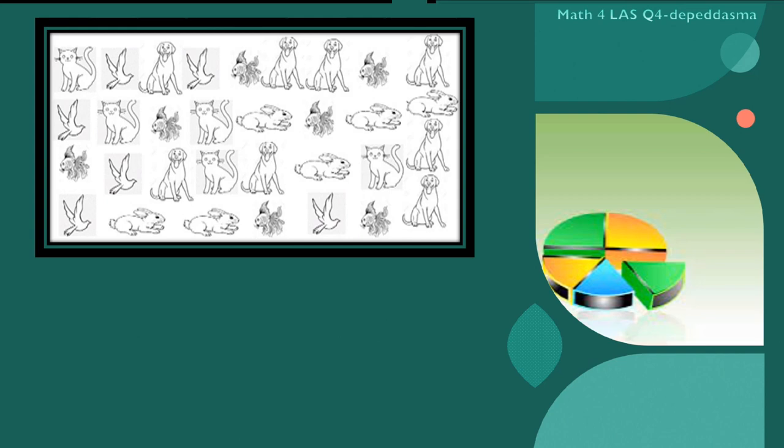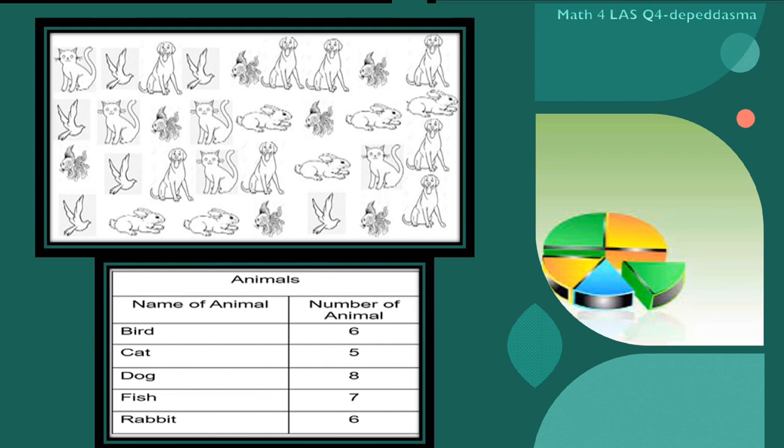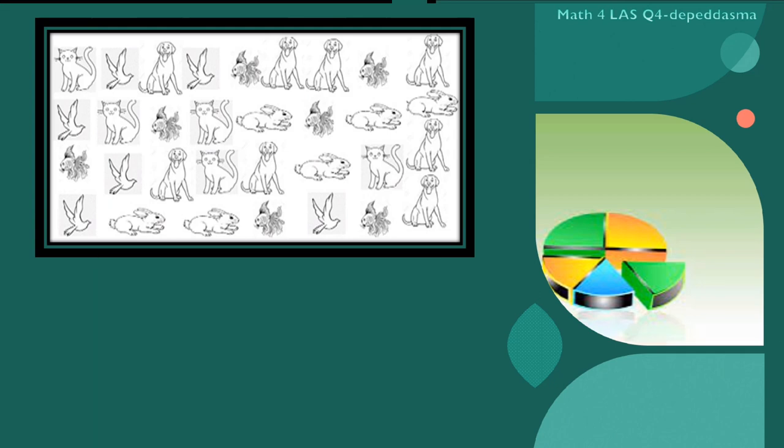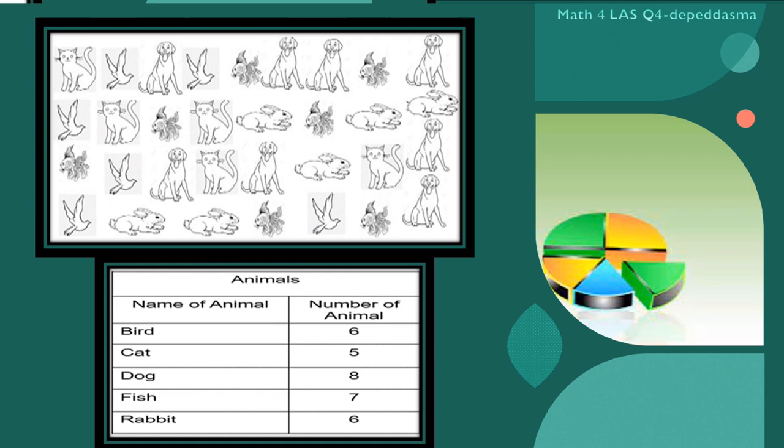The picture is about the different pet animals. How can we organize them so we can easily determine the number of each animal? We can present this in a tabular form. Draw a table and fill in with data. In tabular form, we can easily determine the number of each animal.